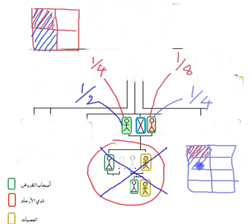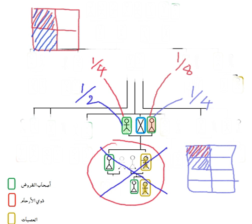If there are no children or grandchildren at all, she receives a quarter — which is two of these boxes, because two eighths equals a quarter. You probably notice: when children don't exist, the husband and wife tend to have a larger share, and when there are children, their share is less.